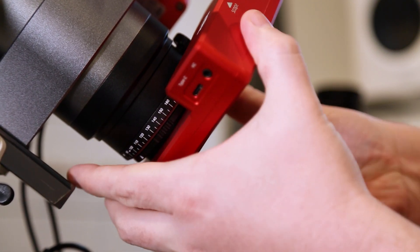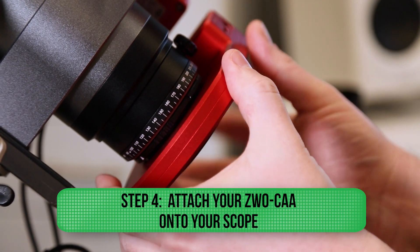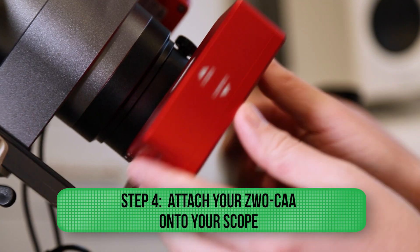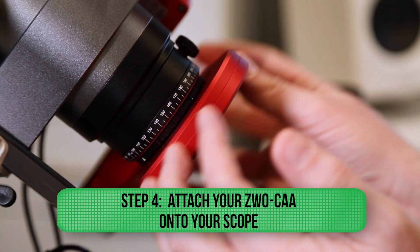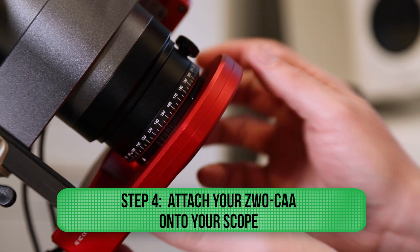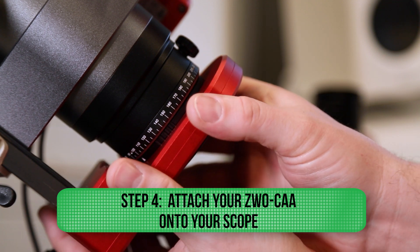At this point, we can screw the camera angle adjuster onto the scope. Just be sure not to over tighten it. Just hand tighten so that it doesn't loosen off is good enough.